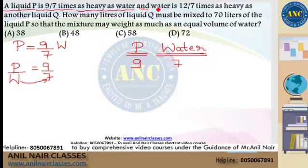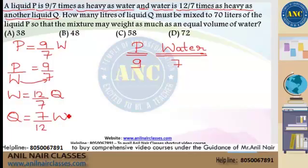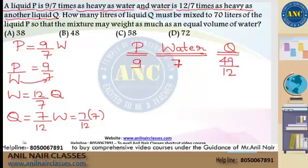Continuing the statement: water is 12/7 times as heavy as another liquid Q. So Q will be 7/12 times of water. But we took the water value as 7, so substituting: Q is 7/12 times of 7, which gives Q = 49/12.